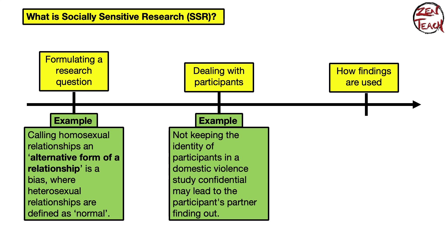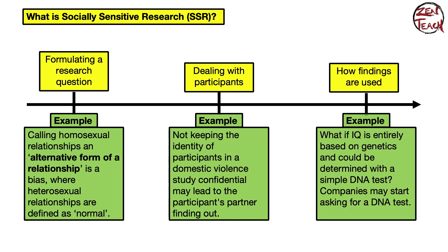If a health insurance company finds out you have a higher predisposition for cancer because of certain oncogenes revealed by a DNA test, they may charge you higher monthly premiums because you represent a greater risk. These are examples of why the confidentiality of research information is really, really important.